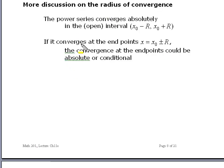For this radius of convergence, the power series converges absolutely in this open interval, x₀ minus R to x₀ plus R. Or in the case of the other power series where x₀ is zero, it converges absolutely in the open interval minus R to R. At the end points, it could converge either absolutely or conditionally.